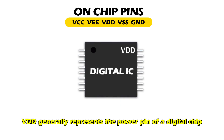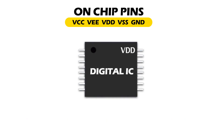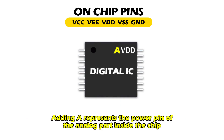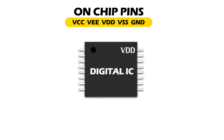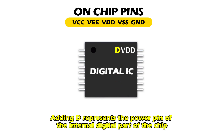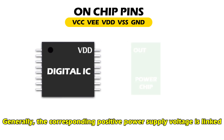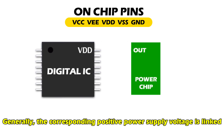VDD generally represents the power pin of a digital chip. Adding A represents the power pin of the analog part inside the chip; adding D represents the power pin of the internal digital part of the chip. Generally, the corresponding positive power supply voltage is linked.